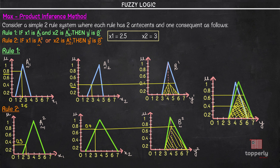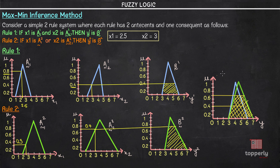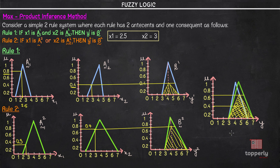An important point: in both Mamdani methods — max-min and max-product — we follow the same steps to obtain the final result. The only difference is that in the max-min method, we use a truncated membership function, while in the max-product method, we use a scaled membership function. Based on that, we obtain the defuzzified value y*.